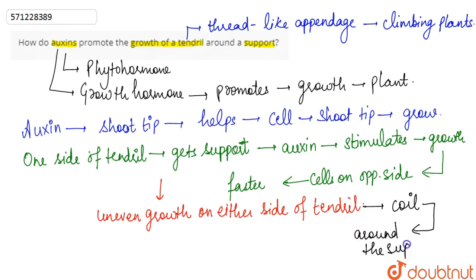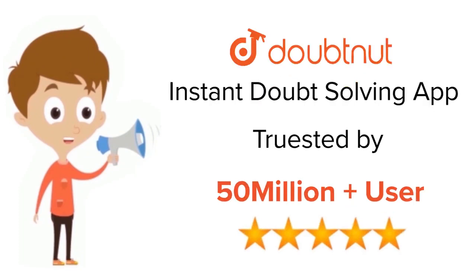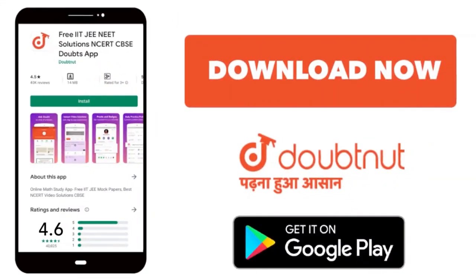Because of this reason, the tendril coils around the support. This is how auxin promotes the growth of a tendril around the support. For class 6 to 12th, IIT JEE, and NEET level — trusted by more than 5 crore students — download the DoubtNet app today.